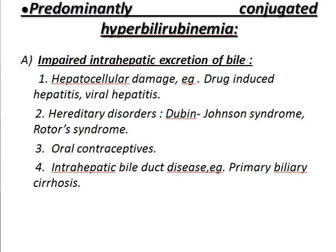Then, predominantly conjugated hyperbilirubinemia due to conjugated bilirubin. Number A: impaired intrahepatic excretion of bile, either within the liver or outside the liver. Impaired intrahepatic excretion within the liver — the causes include: number one, hepatocellular damage due to drug-induced hepatitis or viral hepatitis; number two, hereditary disorders such as Dubin-Johnson syndrome and Rotor syndrome; number three, primary biliary cirrhosis.